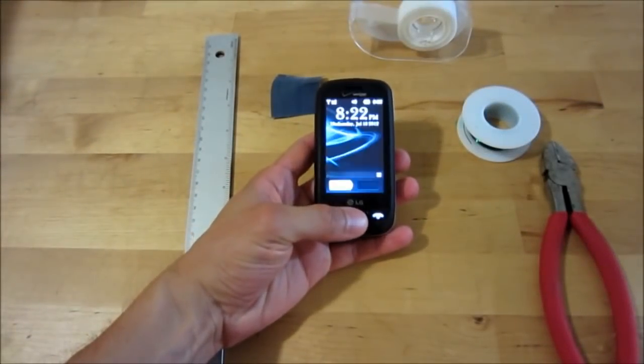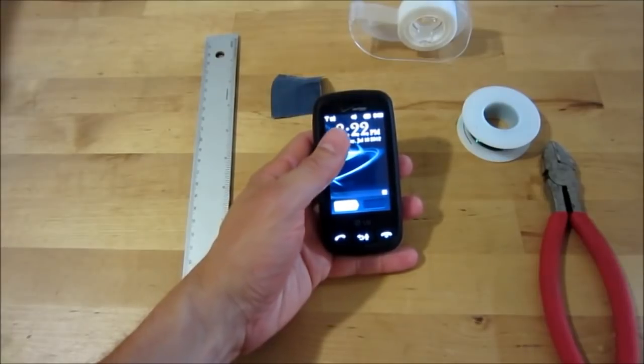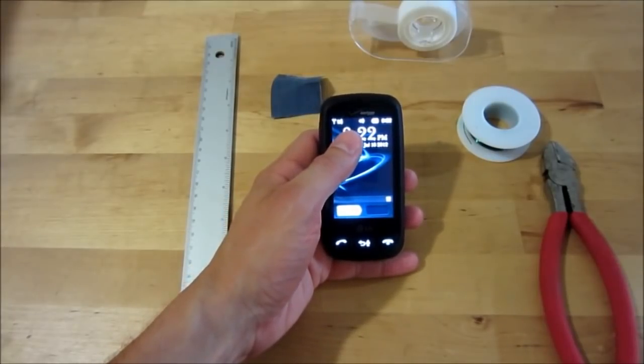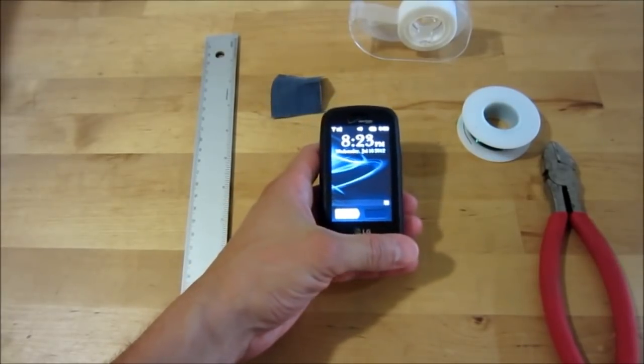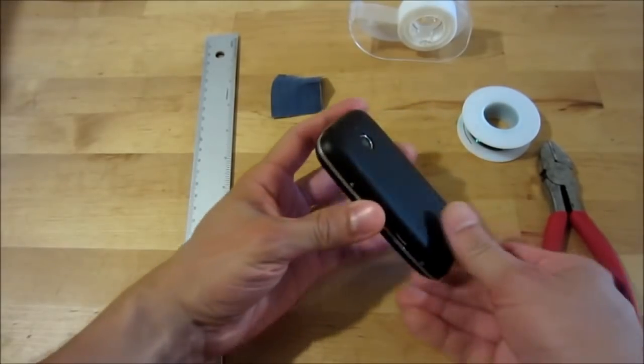My cell phone doesn't get very good reception. As you can see right now, we're at one bar, that's pretty good. But I'm going to improve that by making a simple external antenna.